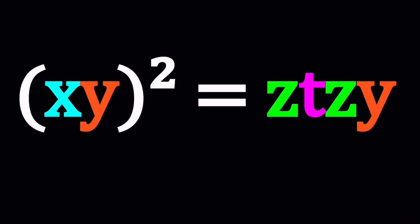We have xy squared equals ztzy, where x, y, z, t are distinct digits, xy is a two-digit number, and ztzy is a four-digit number. And we're going to be solving for x, y, z, and t.